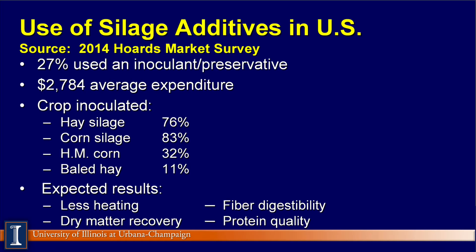Which crops were they inoculating? Alfalfa silage at 76%, corn silage even a little bit higher at 83%, high moisture corn at 32%, and baled hay. When asked why they used it, the four most popular answers were less heating, dry matter recovery improvement, improved fiber digestibility, and maintained protein quality.